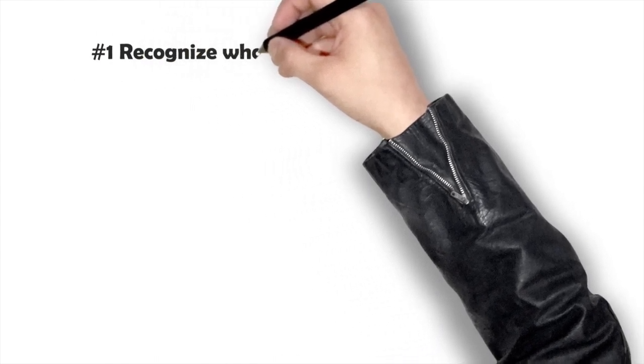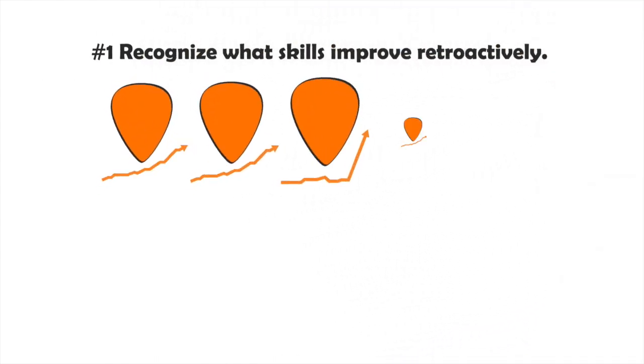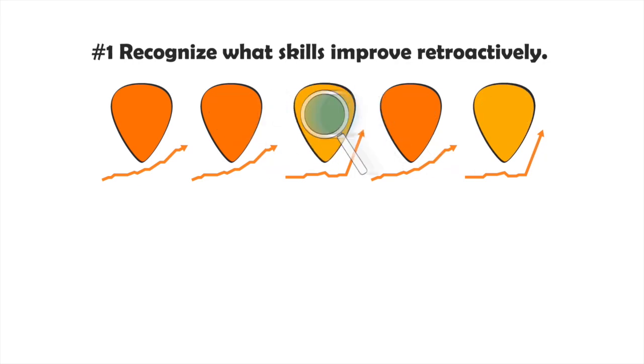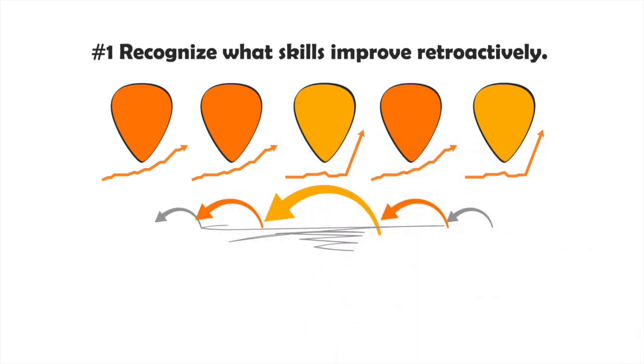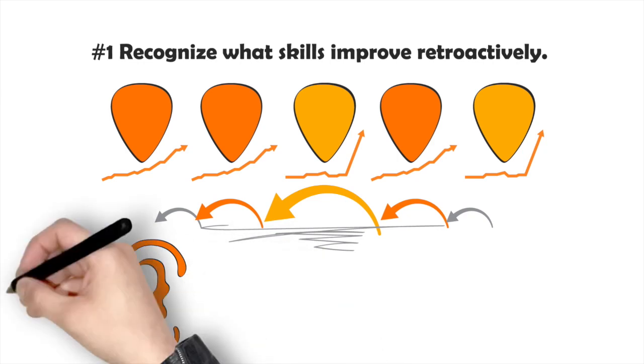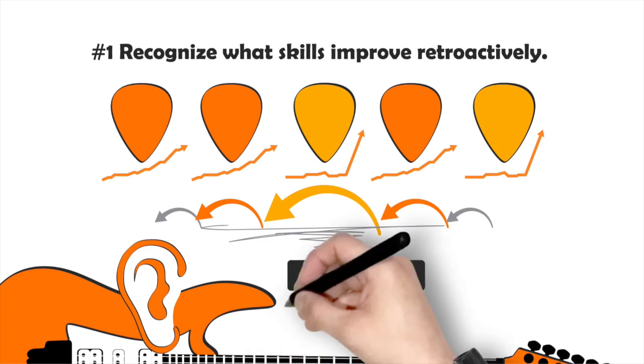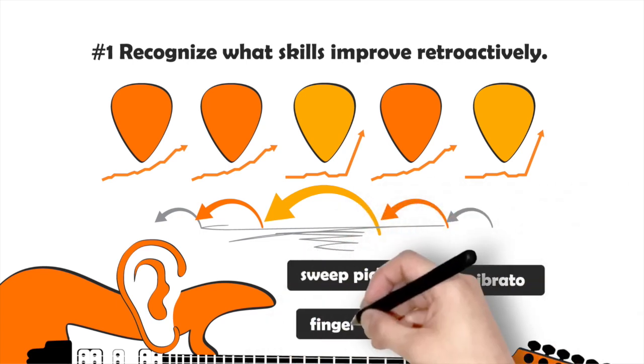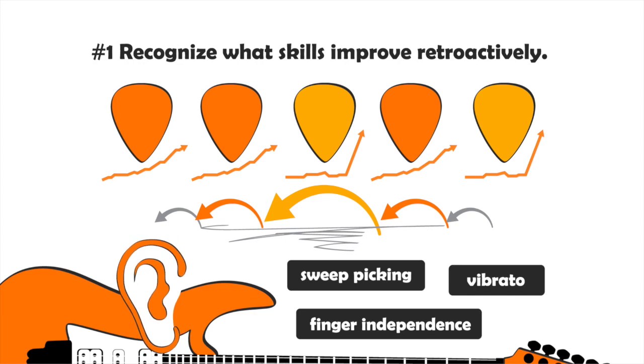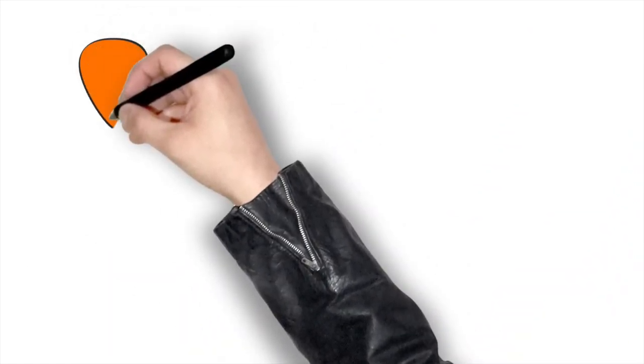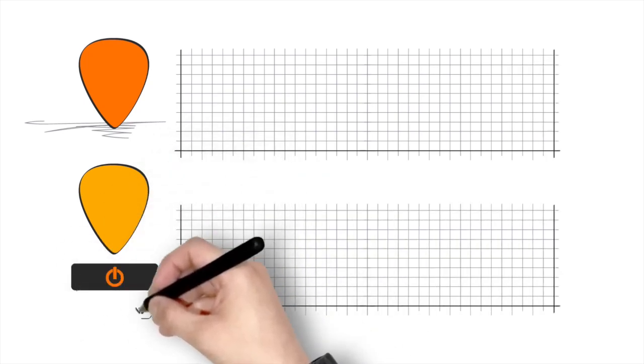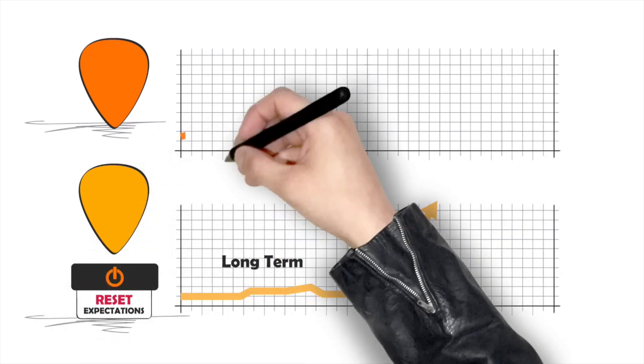First, recognize what skills improve retroactively. Because not all skills improve retroactively. Some actually improve slowly and gradually in more or less a straight line. Retroactive progress usually happens on undoing bad habits when you're playing and learning skills that are way underdeveloped compared to your other skills. For me, it was ear training, and later on, it was about learning to play rhythm guitar in time. For you, it might be sweep picking, vibrato, finger independence in your fretting hand, ear training like me, or something else. Point is, when you know that a skill is improving retroactively, you reset your expectations and start thinking long-term instead of short-term.